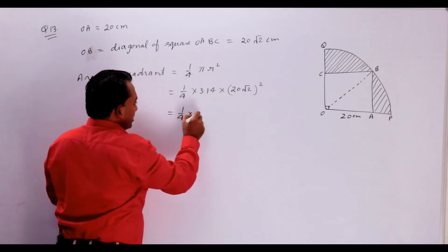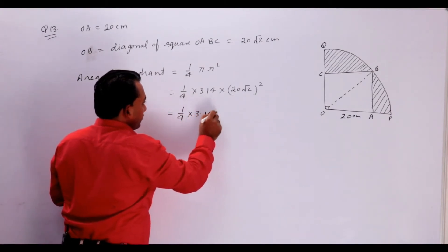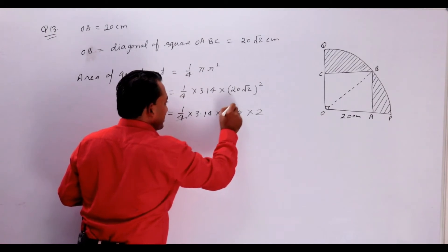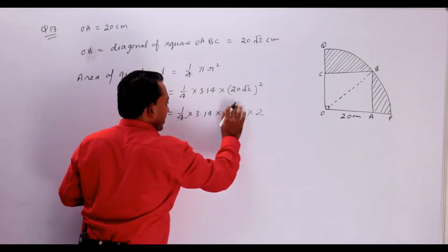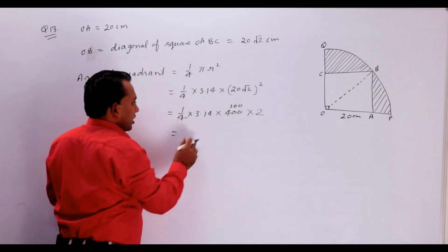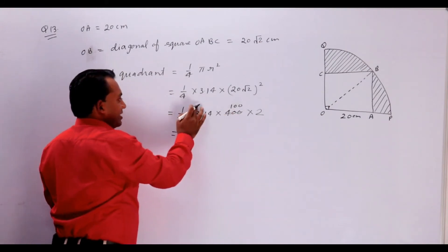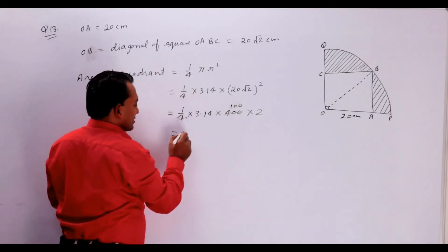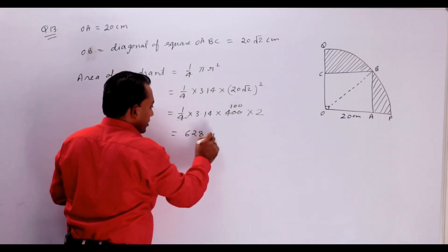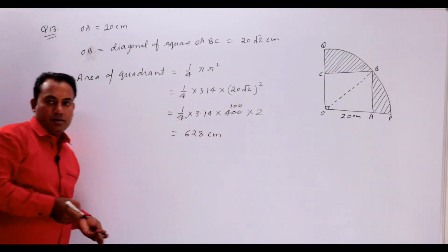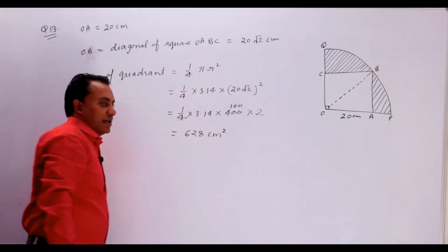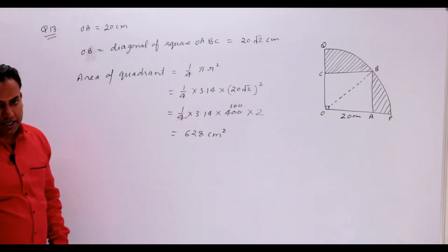Toh yeh 1/4 × 3.14 × 400 × 2 — isse aap ise cancel kar sakte hain. 100 times, aur bachon isse multiply karenge — yeh 314 ho jayega, iska double kar lenge, toh yeh ho jayega 628 centimeter square. Yeh area of quadrant ho gaya.